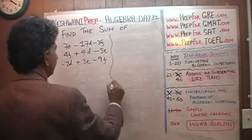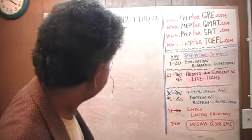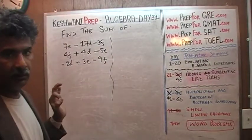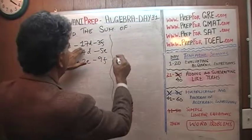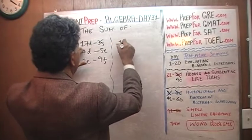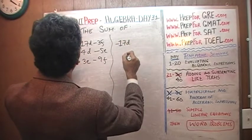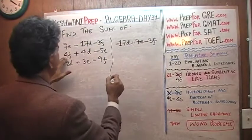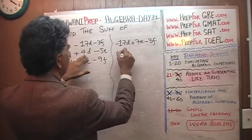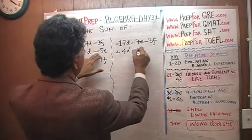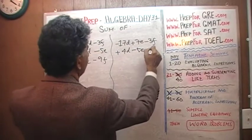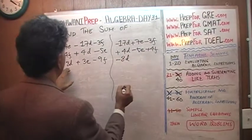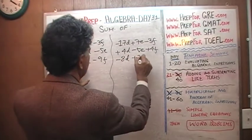We line them up properly and honor the tradition of alphabetical order. So D goes first: negative 17D, then E, then F. The second expression: 4D, then negative 5E, then F. The third expression: negative 8D, then E, then F. Now all the like terms are lined up properly.